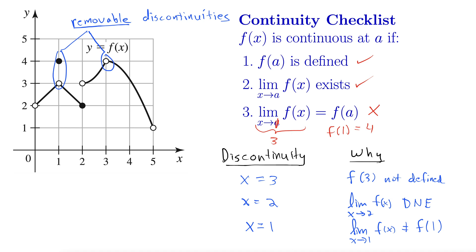However, the discontinuity at x equals 2 cannot be fixed by changing out a single point. So we call this a jump discontinuity because the function jumps right at that point.